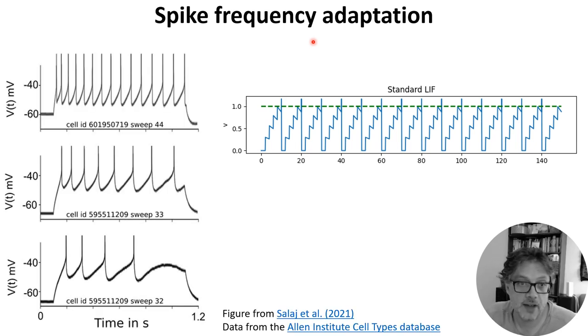However, real neurons have a memory of their recent activity, and here are some recordings from the Allen Institute Cell Types Database that we'll be coming back to later in the course.